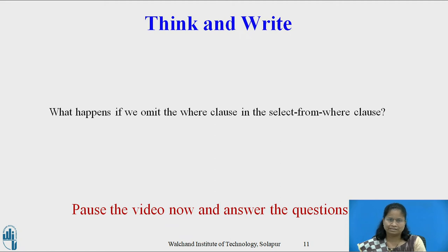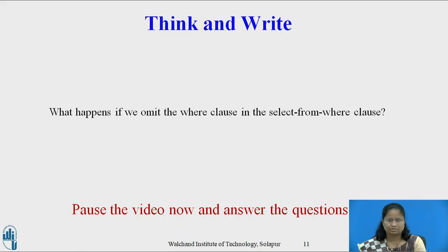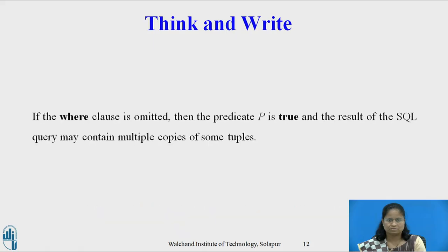Till now, we considered the SELECT FROM WHERE clause. Now pause this video and reflect on this question for a minute or two, and write your response: What happens if we omit the WHERE clause in the SELECT FROM WHERE clause? Once you have your answer, restart the video. If the WHERE clause is omitted, the predicate P is true and the result of the SQL query may contain multiple copies of some tuples.